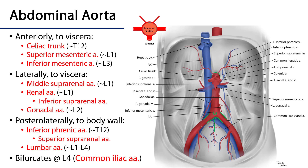When we consider the various branches of the abdominal aorta, we should think both about the directionality of the branch as well as the vertebral level that the branch occurs. There are anteriorly oriented branches to viscera, there are laterally oriented branches, and then there are posterior-laterally oriented branches.